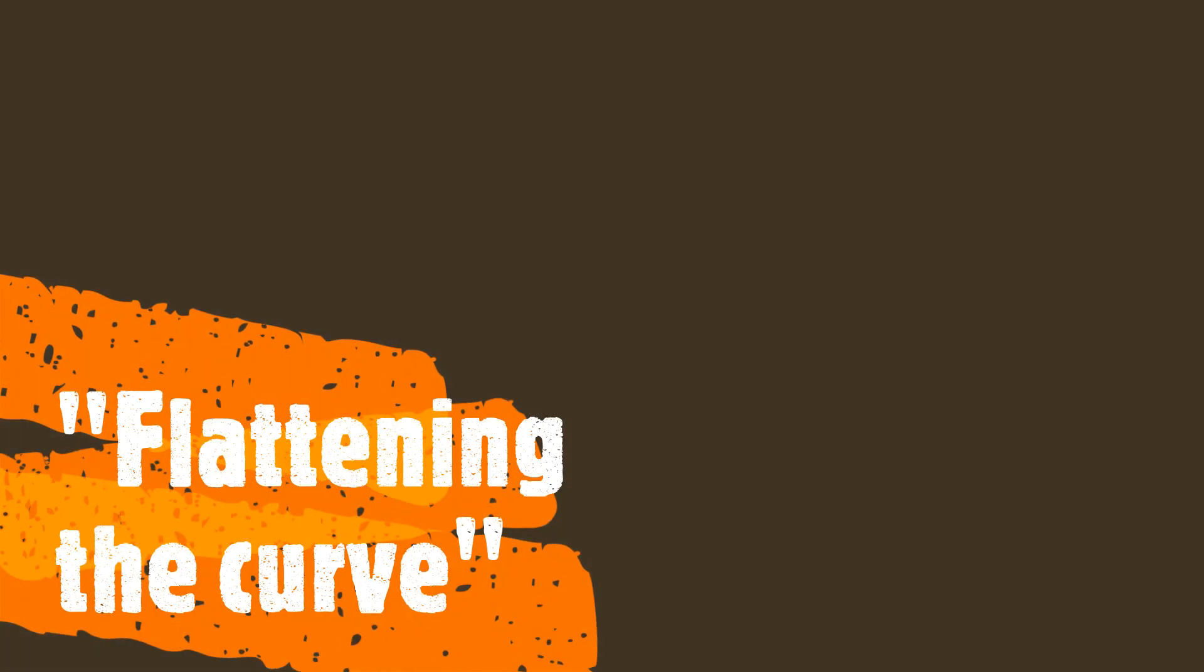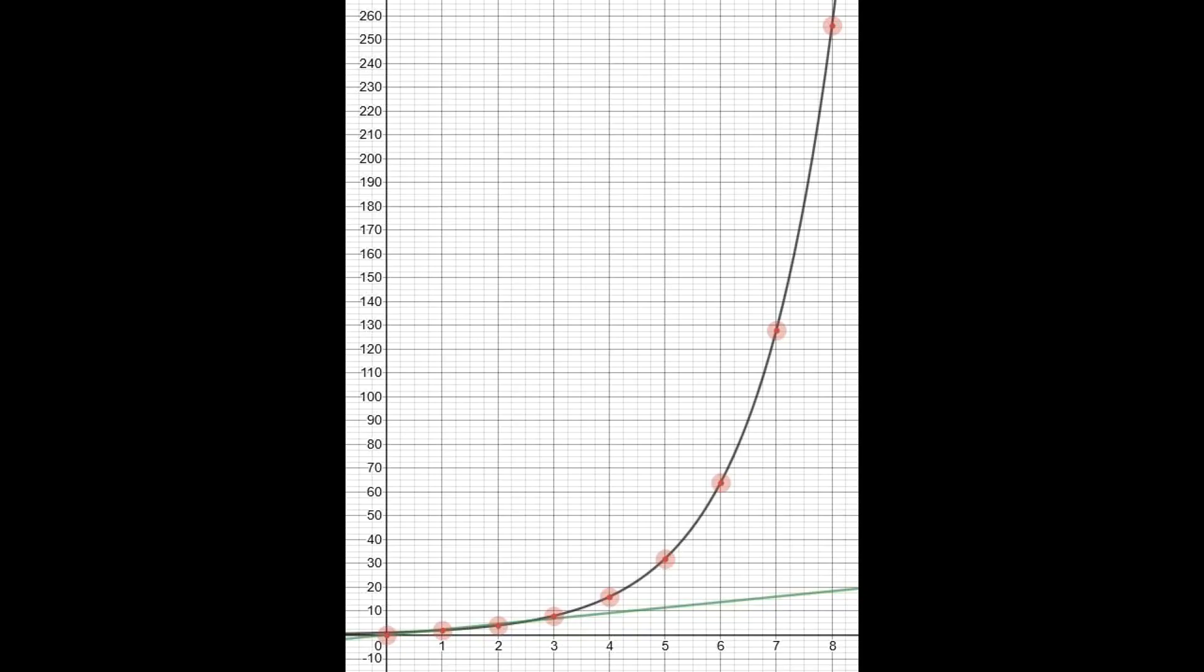So, where does all this maths get us in terms of understanding the problems we face right now with COVID-19? Let's go back to the graph that we had when we were looking at the chessboard, with that black line showing exponential growth rather than the green, steady growth which it might have appeared to have been in the early days.